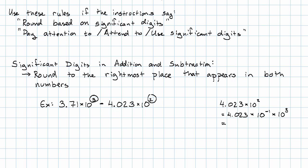So 4.023×10⁻¹, that's 0.4023, and then the times 10³ is still there.